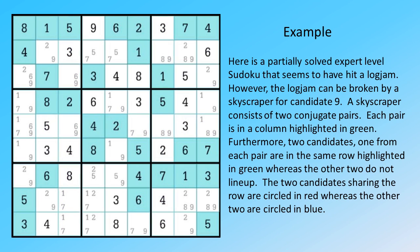Here is a partially solved expert-level Sudoku that seems to have hit a logjam. However, the logjam can be broken by a skyscraper for candidate 9. A skyscraper consists of two conjugate pairs. Each pair is in a column, highlighted in green.